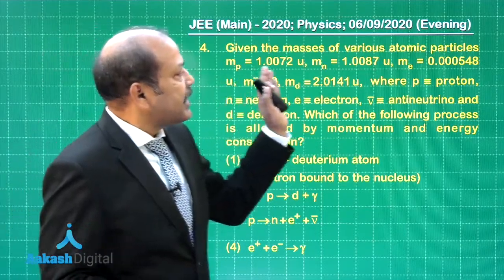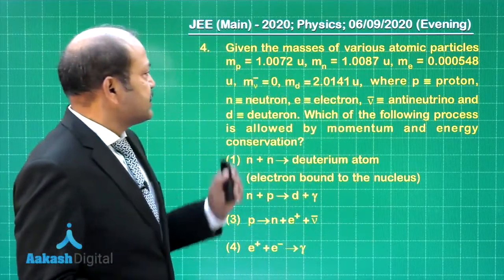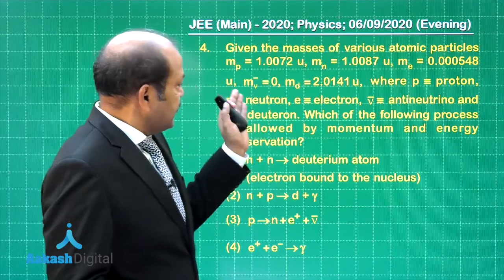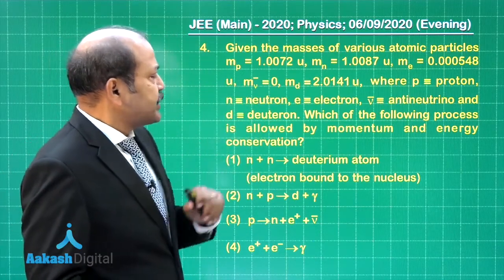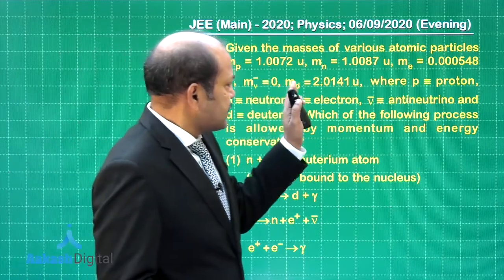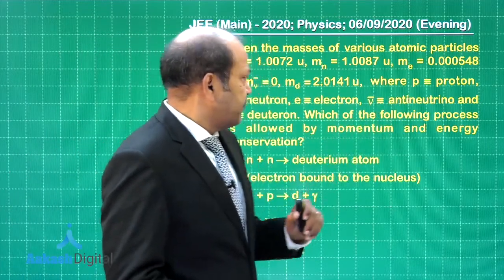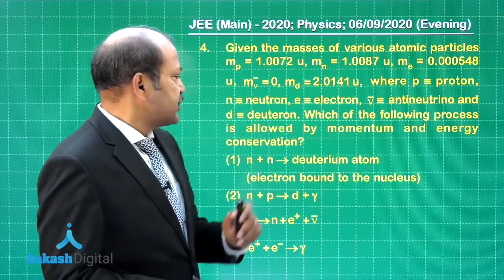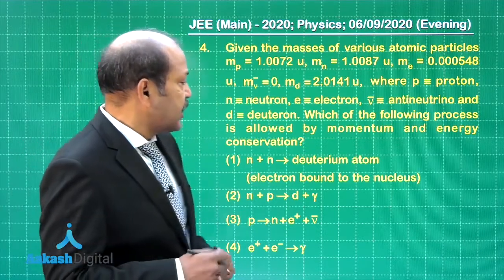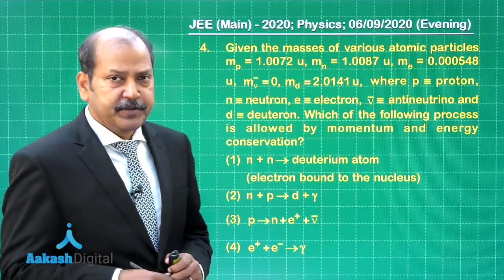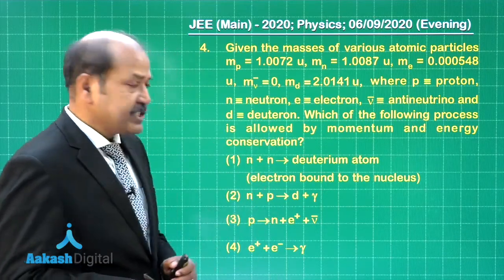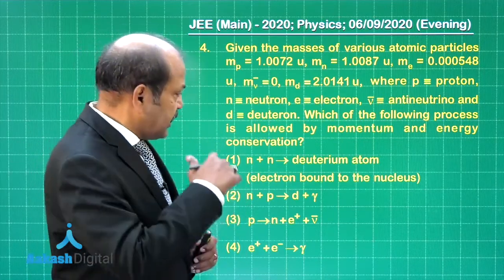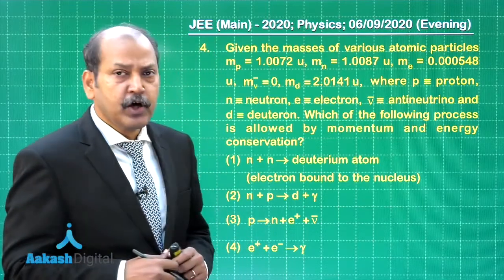Question 4 says, given the masses of various atomic particles mp equal to so much, mn, me, m anti-neutrino rather, where p is proton, n is neutron, e is electron. In fact, this is given as anti-neutrino and d is deuteron. Which of the following process is allowed by momentum and energy conservation? Well, the four processes have been given and we have to select the one which is allowed considering momentum and energy conservation.